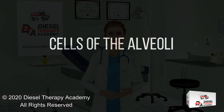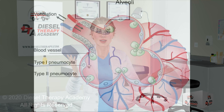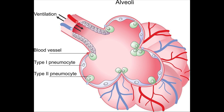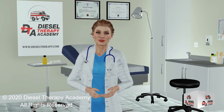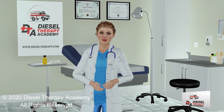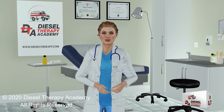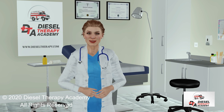The alveoli are made up of two different types of cells. Type 1 pneumocytes are responsible for the exchange of oxygen and carbon dioxide. Type 2 pneumocytes perform two important functions: they repair damage to the alveolar lining and also secrete surfactant. There are also many immune cells known as alveolar macrophages in the alveoli. Macrophages phagocytize or eat debris they come across, and are responsible for cleaning up particles not caught by the cilia or mucus in the upper respiratory tract, as well as dead cells and bacteria.